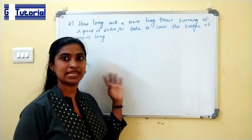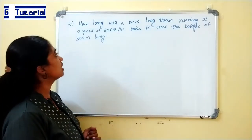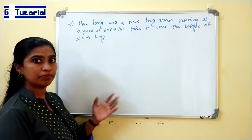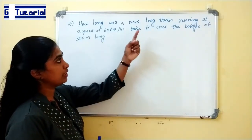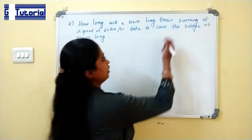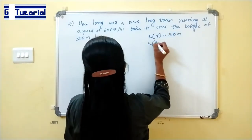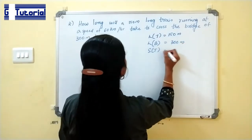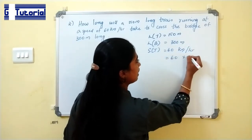This is the second problem. How long will a 150-meter long train running at a speed of 60 km per hour take to cross a bridge of 300 meters long? We need to calculate the time taken to cross the bridge. The length of the train is 150 meters, the length of the bridge is 300 meters, and the speed is 60 km per hour, which is 60 × 5/18 meters per second.